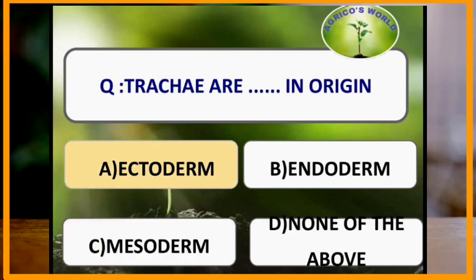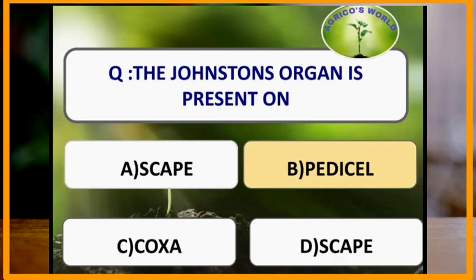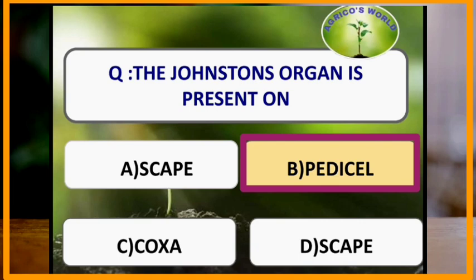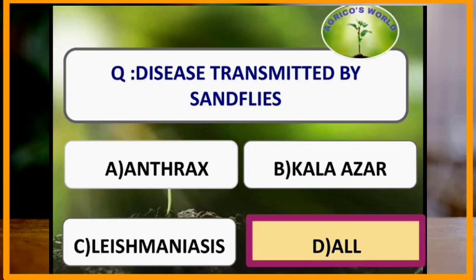Trachea are ectodermal in origin. The Johnston's organ is present on the pedicel of antennae. Diseases transmitted by sandflies include anthrax, kala-azar and leishmaniasis.